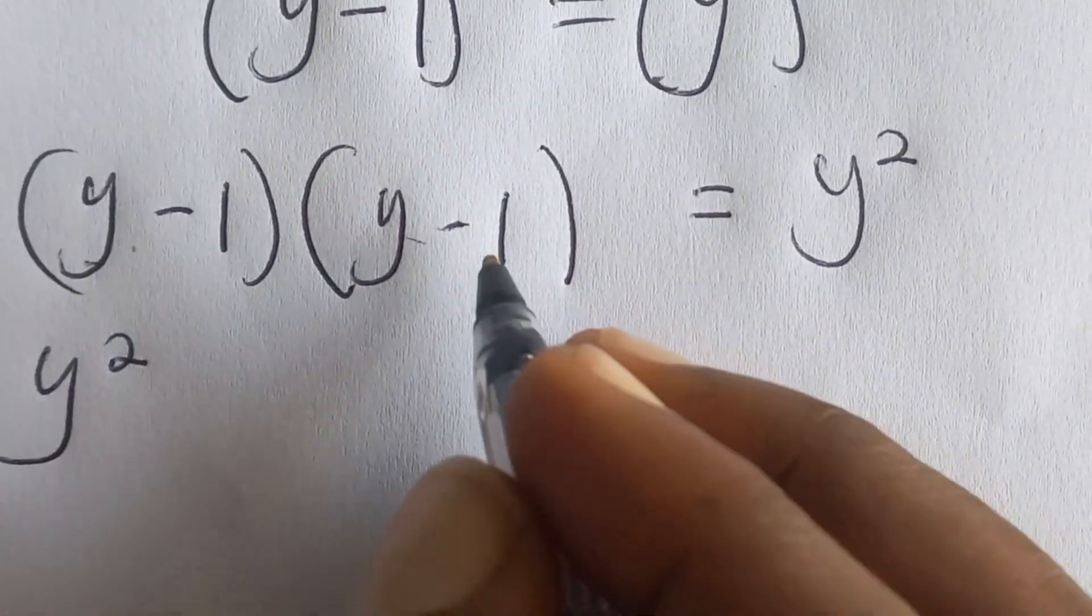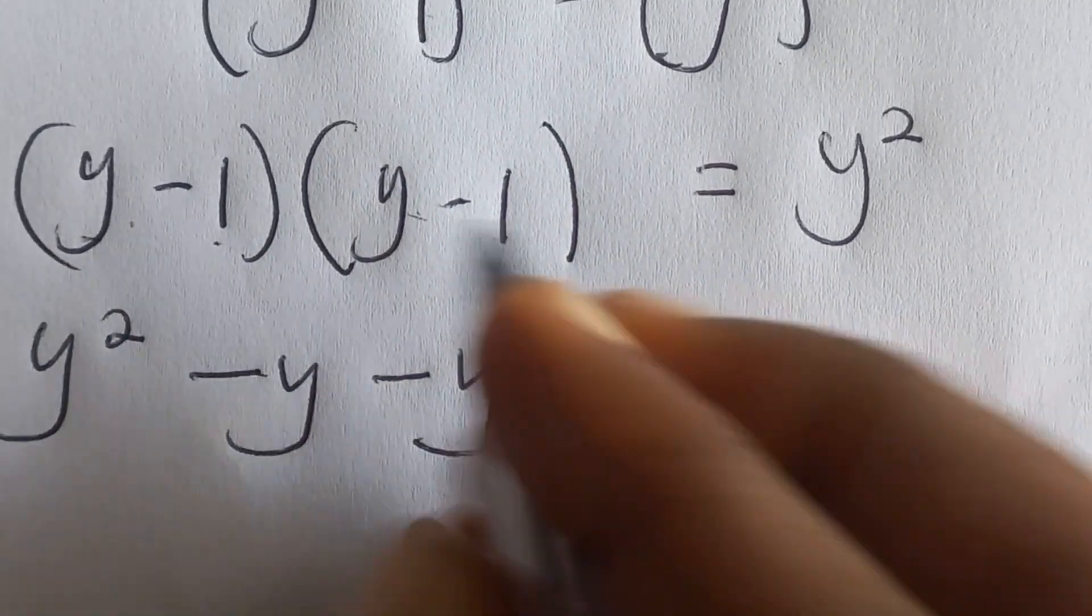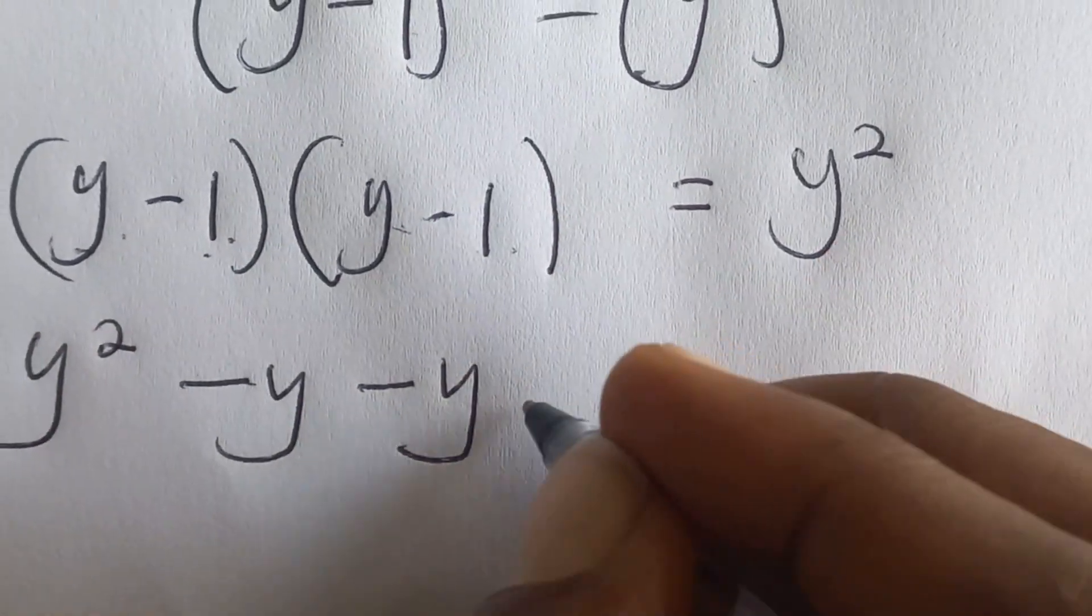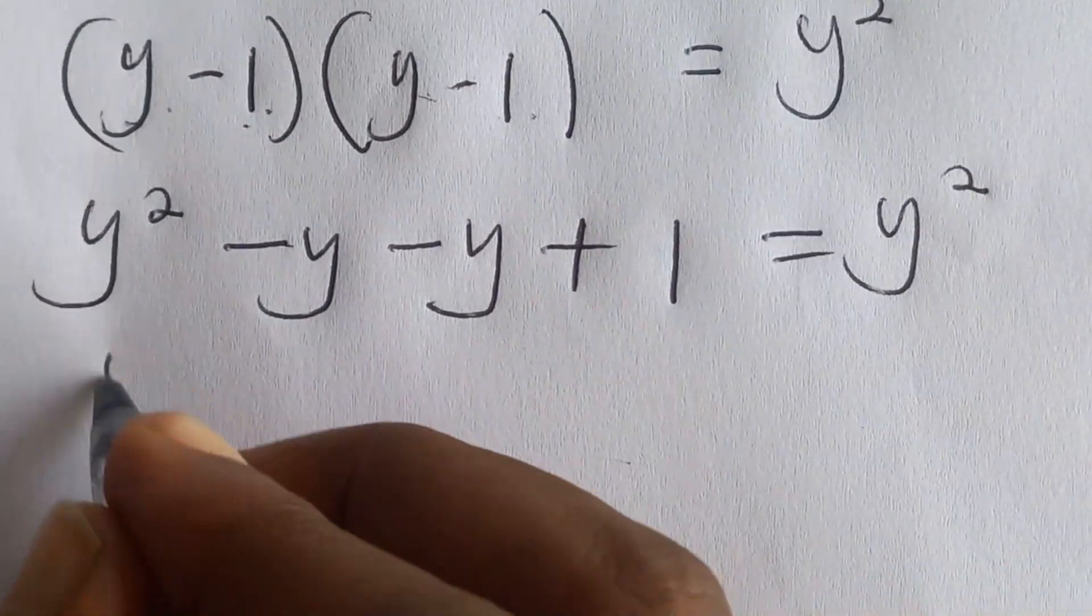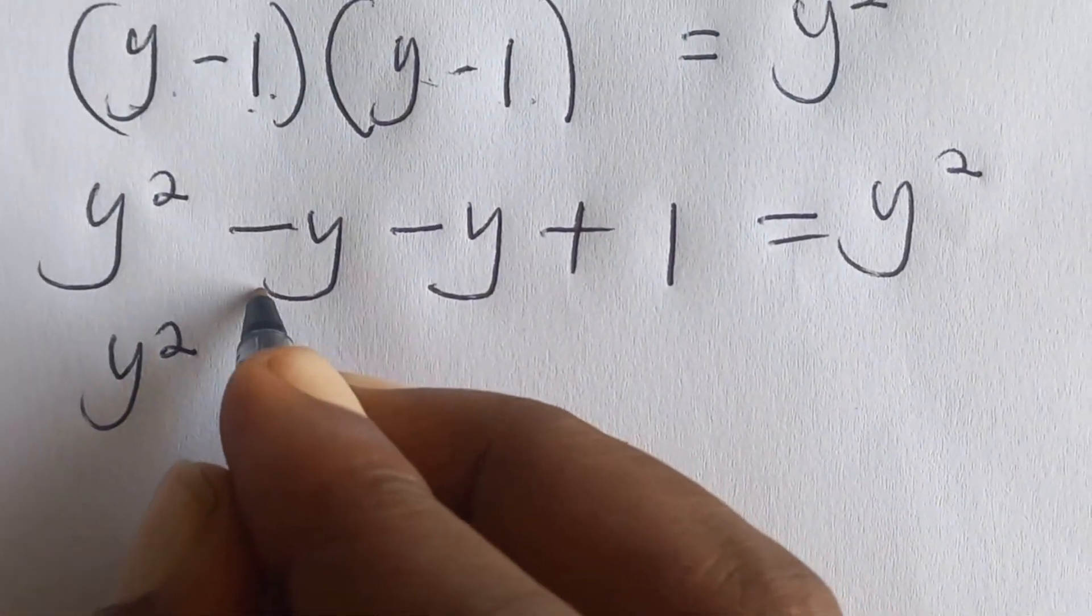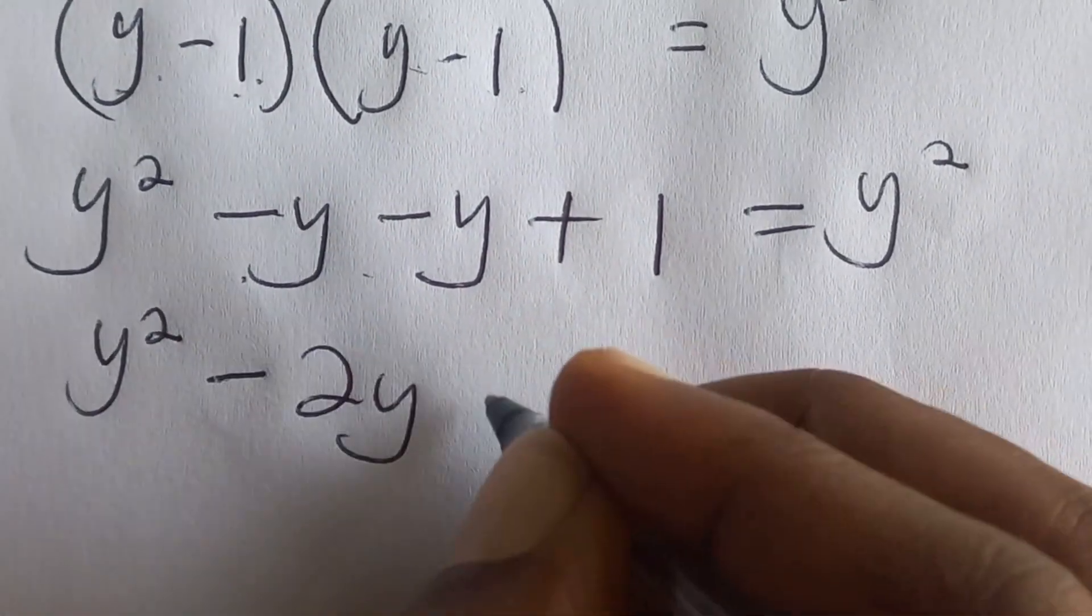Y times negative one is negative y. Negative one times y is negative y. Negative one times negative one is plus one, which is equal to y squared. We have y squared minus y minus y, which gives us negative 2y plus one is equal to y squared.